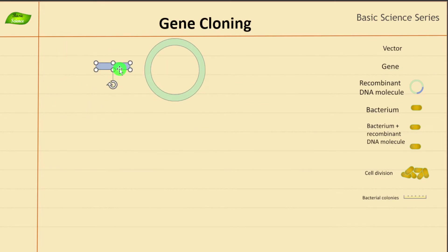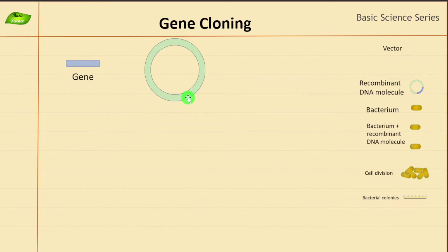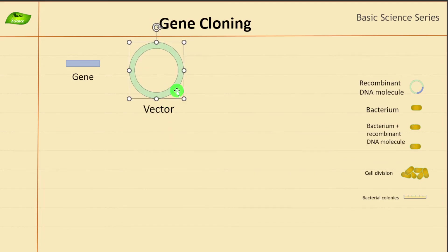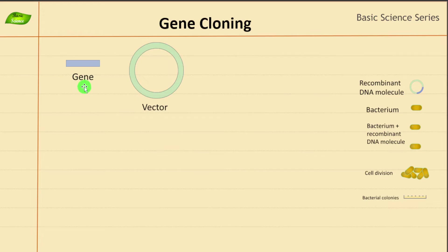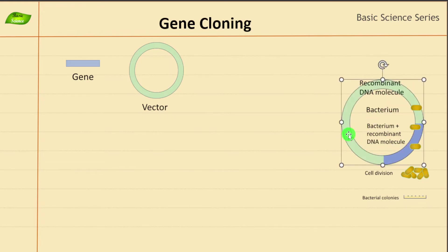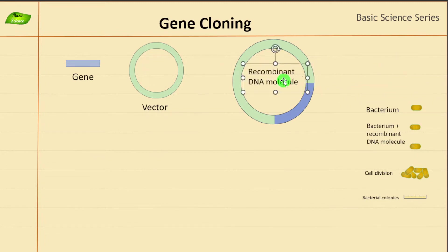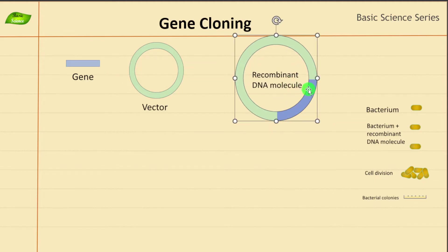Let's formulate this as an illustration. This is the gene of interest isolated using PCR, and this is the plasmid — our vector — which carries the information to another destination, in this case a bacterial cell. The gene will be inserted into this vector, and we will have a recombinant plasmid molecule. As you can clearly see, the foreign gene is inserted into the plasmid.